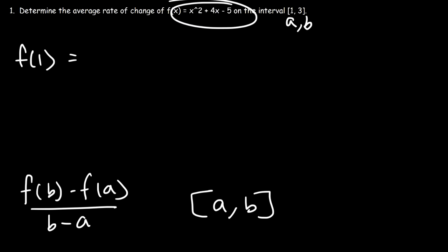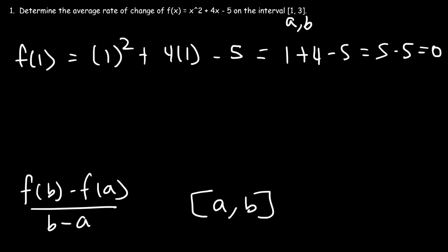So it's going to be 1² + 4(1) - 5. So that's going to be 1 + 4 - 5. 1 + 4 is 5. 5 - 5 is 0. So f(1) is 0.